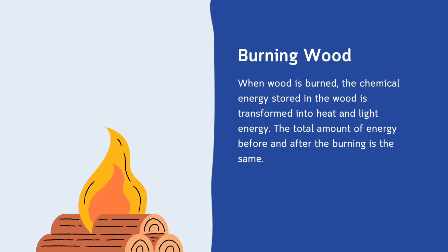Now we will move to our next example: the burning of wood. When wood is burned, the chemical energy stored in the wood is transformed into heat and light energy. The total amount of energy before and after the burning is the same.